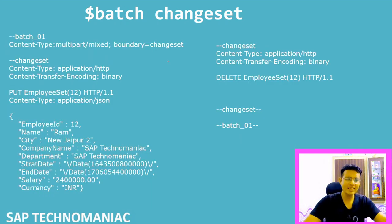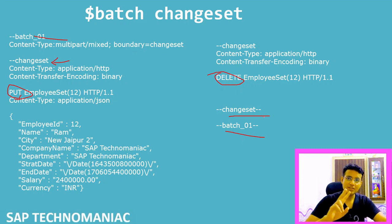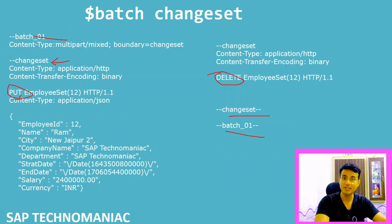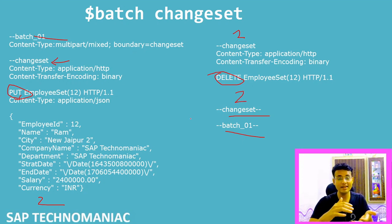Here is the example with one change set containing two operations — a PUT and a DELETE. The change set starts here and ends here. As soon as we have two operations in that change set, we must implement the two methods. Also, as you already know from my previous video, after each operation there must be two blank lines in the payload — that is an important formatting rule to follow.